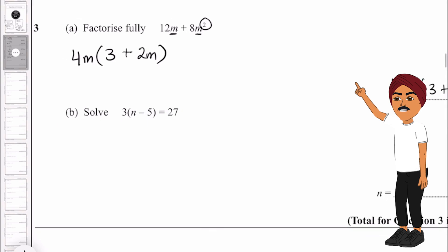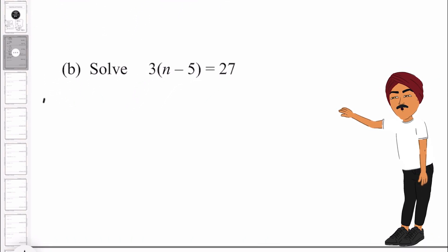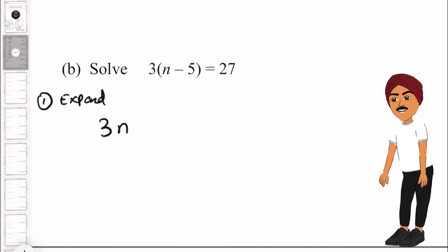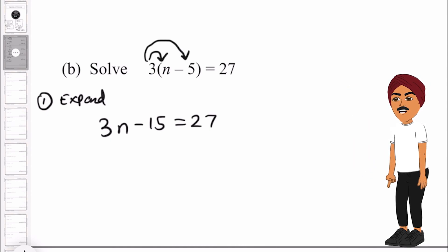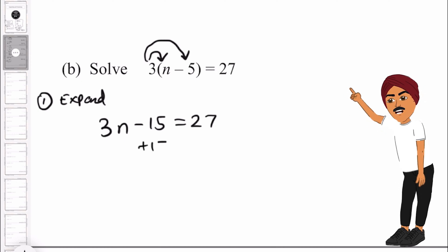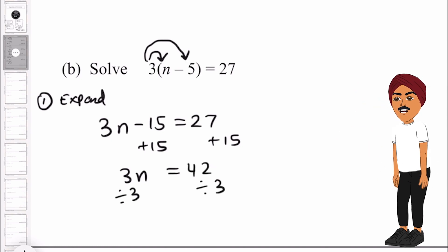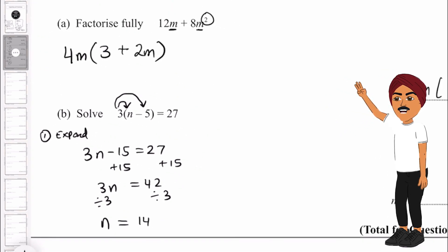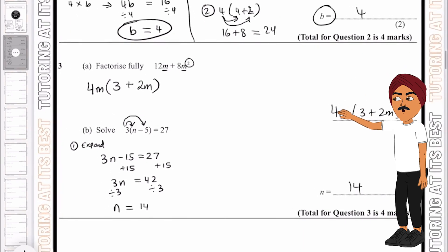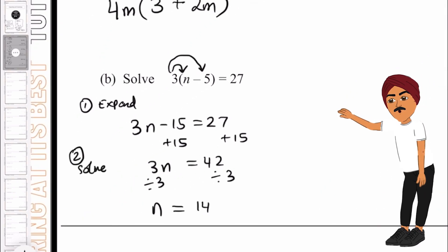Part b is similar to 2b — we solve for n. Step one is to expand: 3(n − 5) gives us 3n − 15 equals 27. We then add 15 to both sides, leaving 3n equals 42. Dividing both sides by 3 to isolate n, we get n equals 14, because 42 divided by 3 is 14. This is a two-step method: expand, then solve.